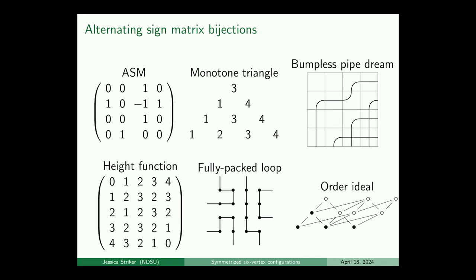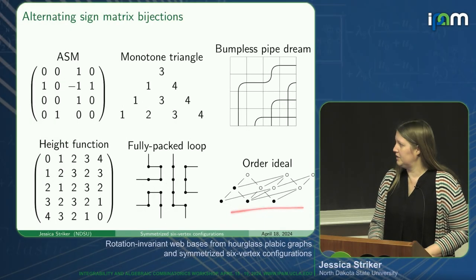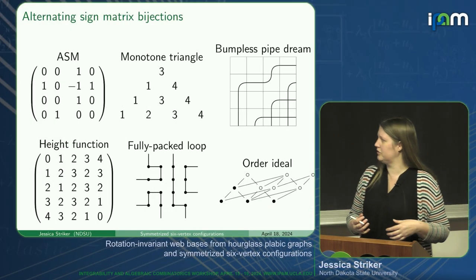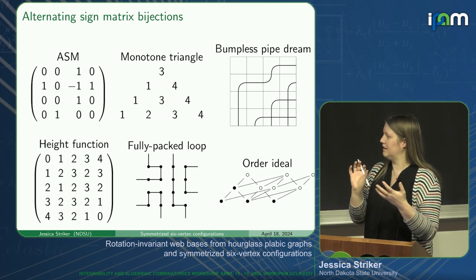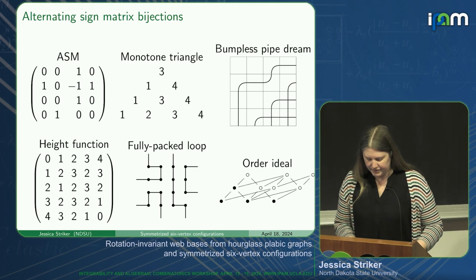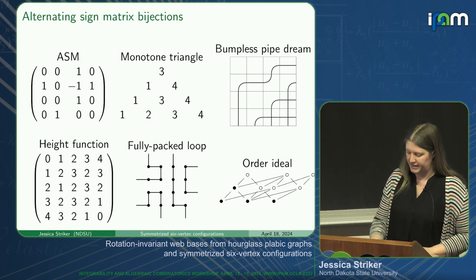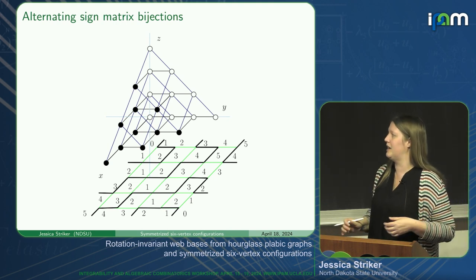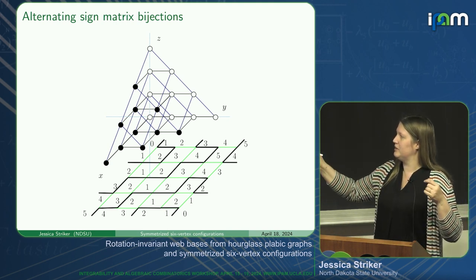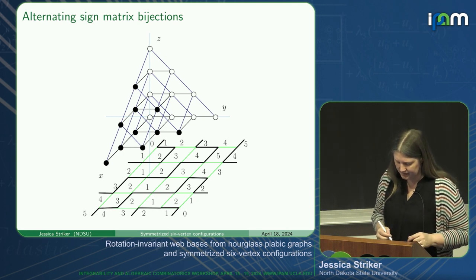Some other things that we love about alternating sign matrices is they're in bijection with a lot of different things, most of which we've already seen in this conference. Here are the bumpless pipe dreams that Anna showed us, the monotone triangles that Hans showed us, the height function that Paul showed us, a fully packed loop, and one of my favorite ways of looking at them as order ideals in a tetrahedral poset—which is really the tetrahedron, just drawn a little bit differently.